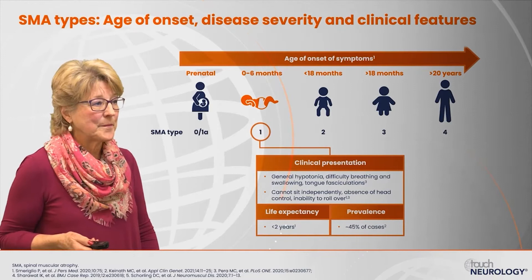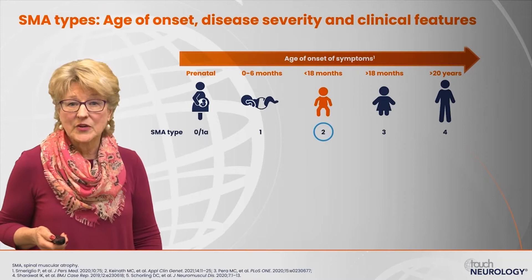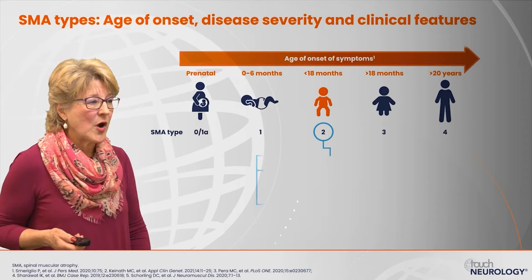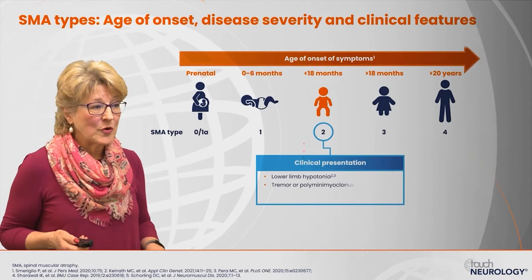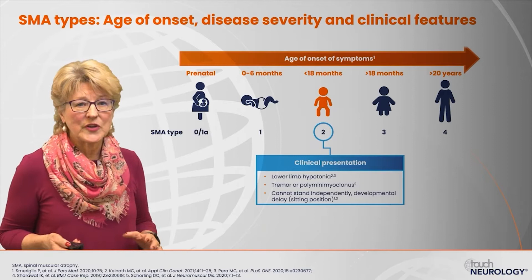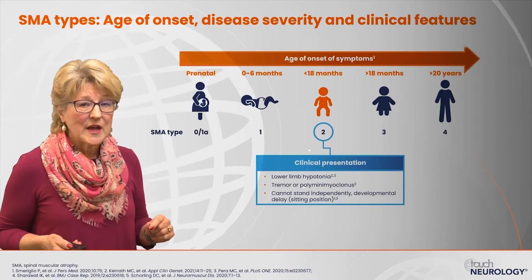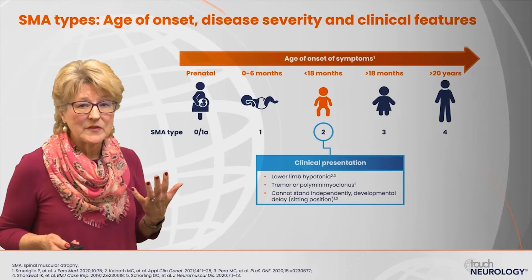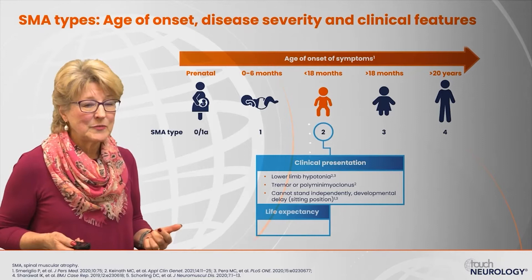In type 2 patients, symptoms develop at less than a year and a half of age. These patients are able to sit but typically not stand or walk. They present with lower limb hypotonia and tremor or polyminiomyoclonus. They are not able to stand independently and may be referred for developmental delay. It's important to understand that spinal muscular atrophy is a disorder of the motor neurons, so there is no cognitive impairment or intellectual disability. Life expectancy is more than a couple of years, representing about 20% of prevalent cases.